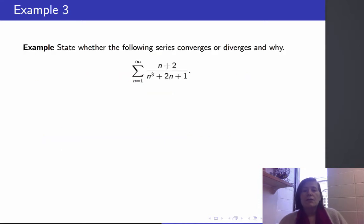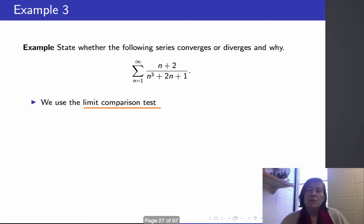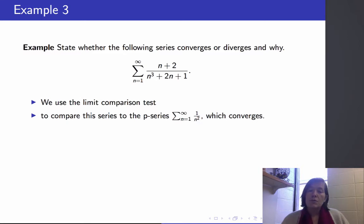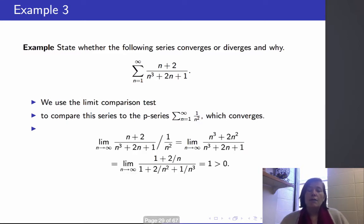Here the terms of the series are a rational function of n: (n+2) over (n³ + 2n + 1). As mentioned before, the best approach is to use the limit comparison test and compare to a p-series. To decide which p-series to use, we take the highest power in the numerator divided by the highest power in the denominator: n over n³, which is 1/n². So we compare to the p-series sum of 1/n², which we know converges.